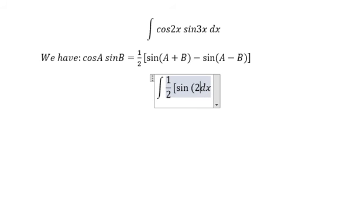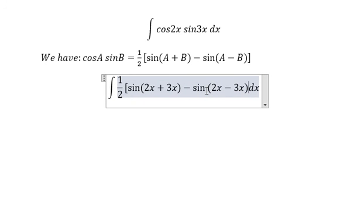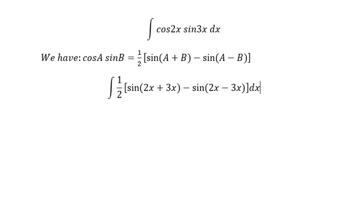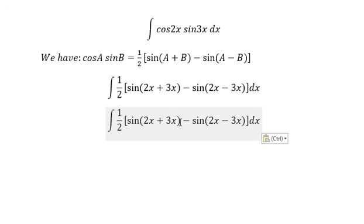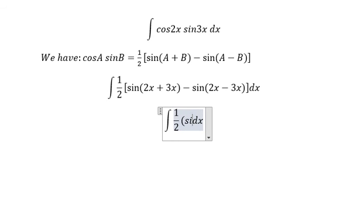In here we will get sine 5x because we have the negative and we have 2x minus 3x. You get negative times negative and negative you get positive.